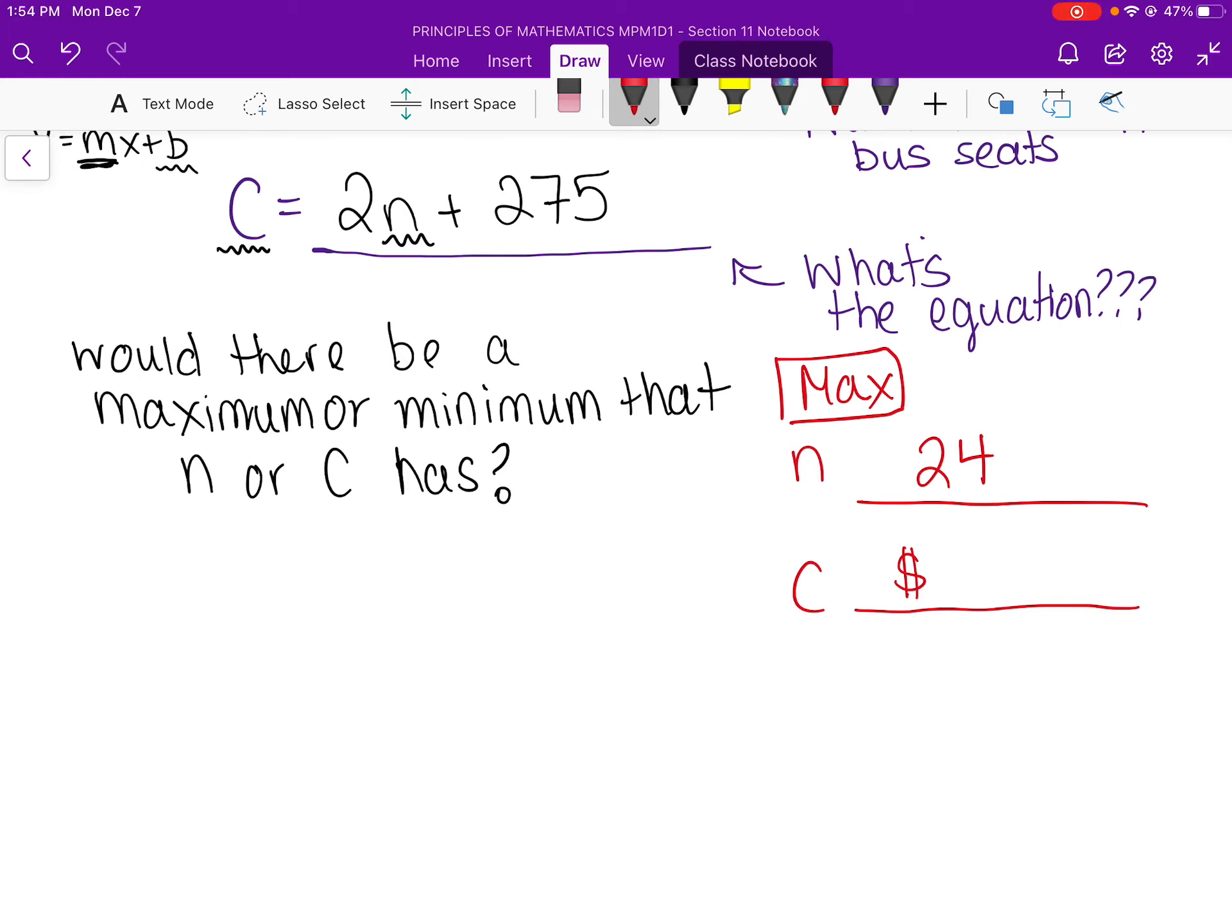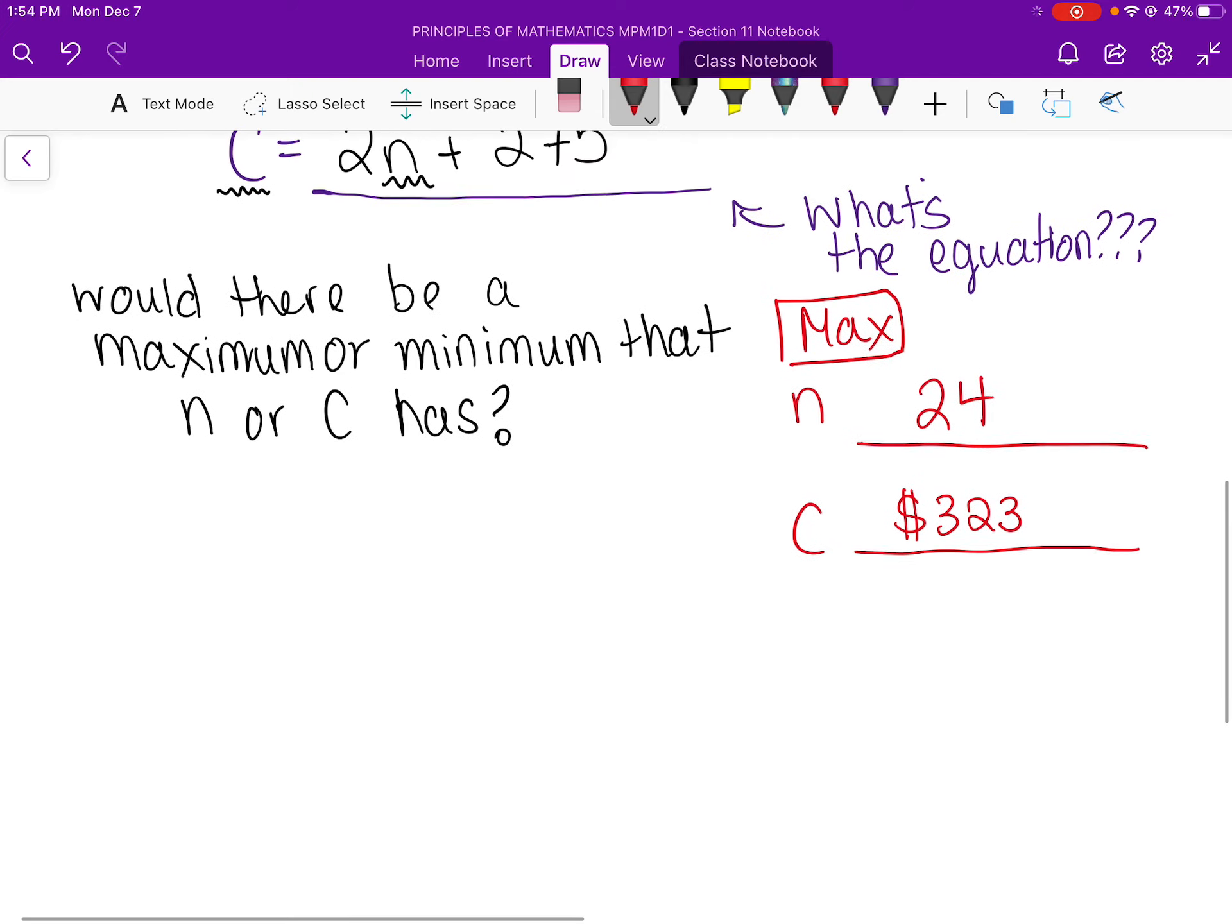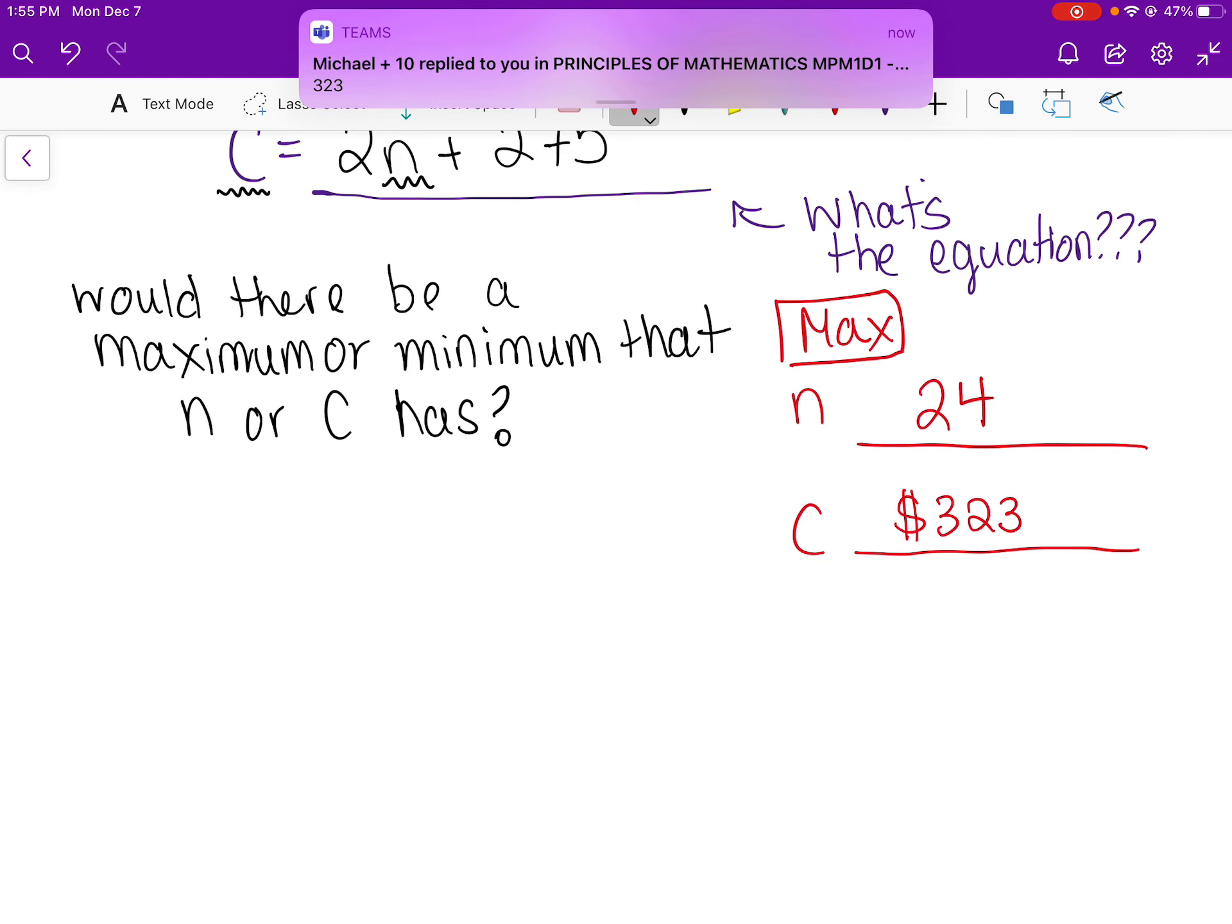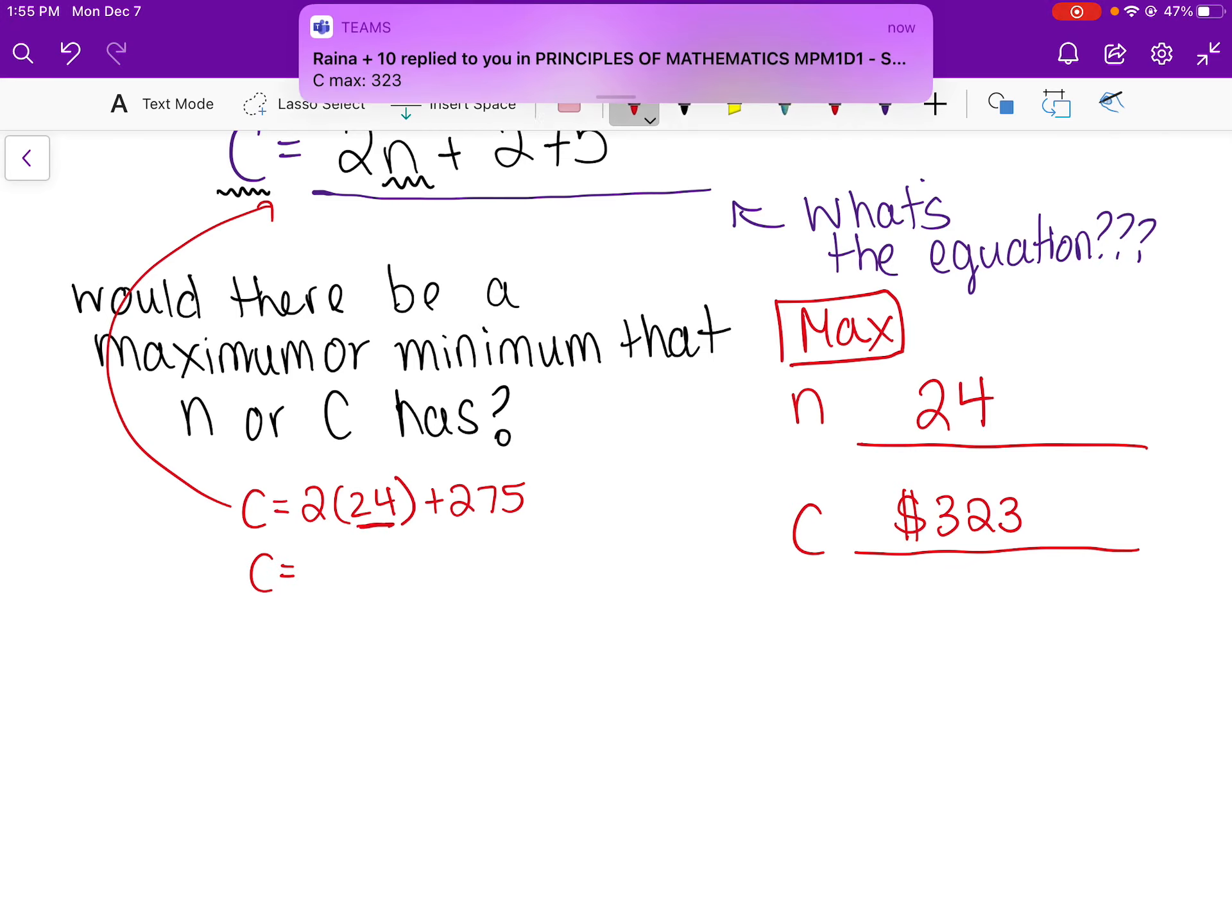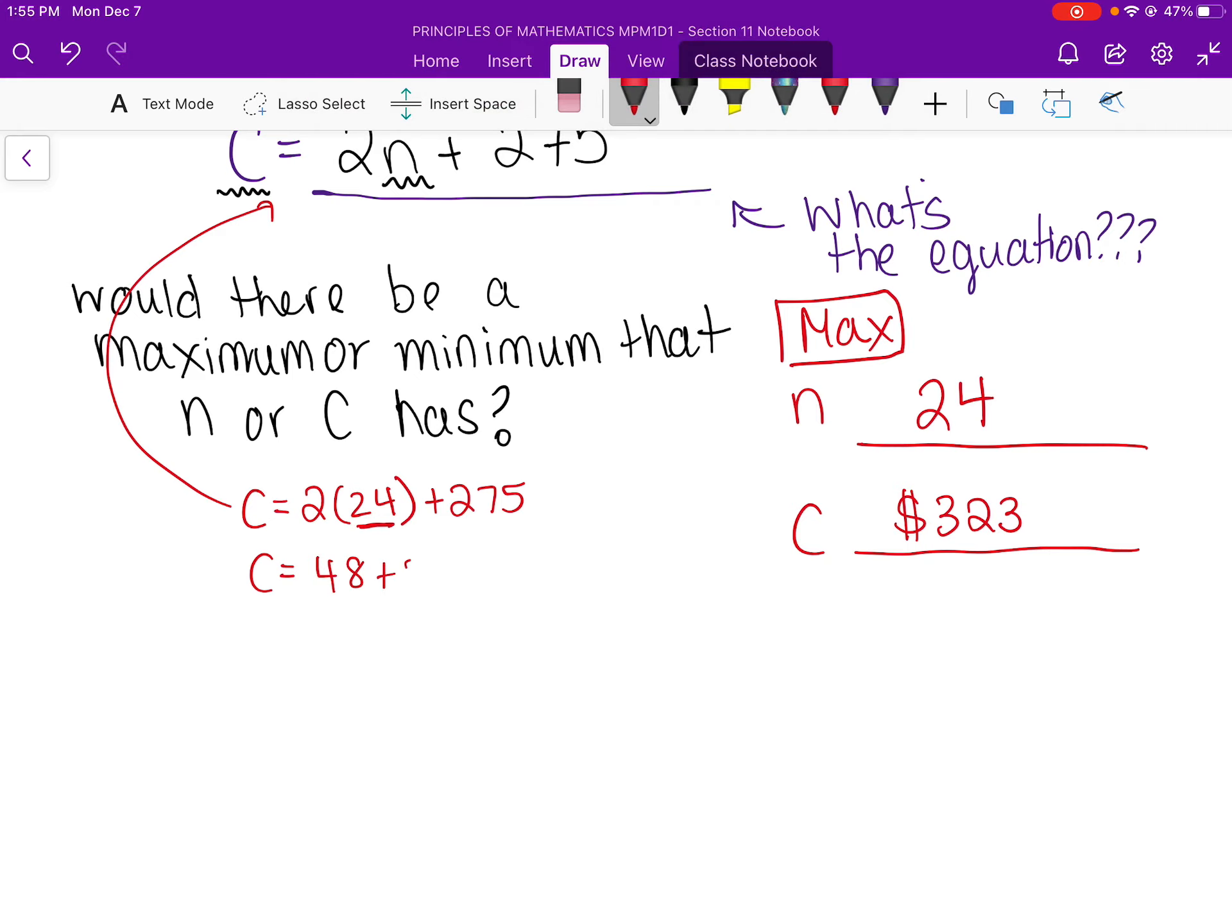Okay, Raina says 323. Yeah, because according to your equation. Ah, lost my mouse. Here you go. According to your equation, C equals 2 times 24 plus 275 if you have 24 seats. Yeah, Michael, you got it. So 2 times 24 is 48 plus 275 equals 323. So the most money that the bus company will cost is, or the bus will cost is $323. If you use all 24 seats on the bus, you'll have to pay $323. And the maximum number of seats on the bus is 24.